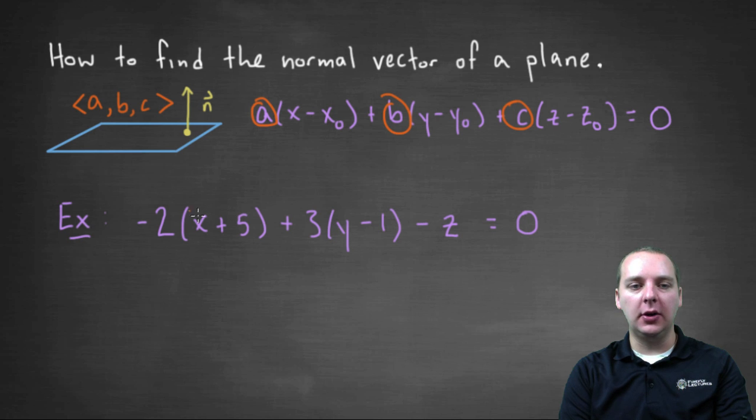So let's do an example here. Here you've got negative two times x plus five, plus three times y minus one, minus z, equals zero.